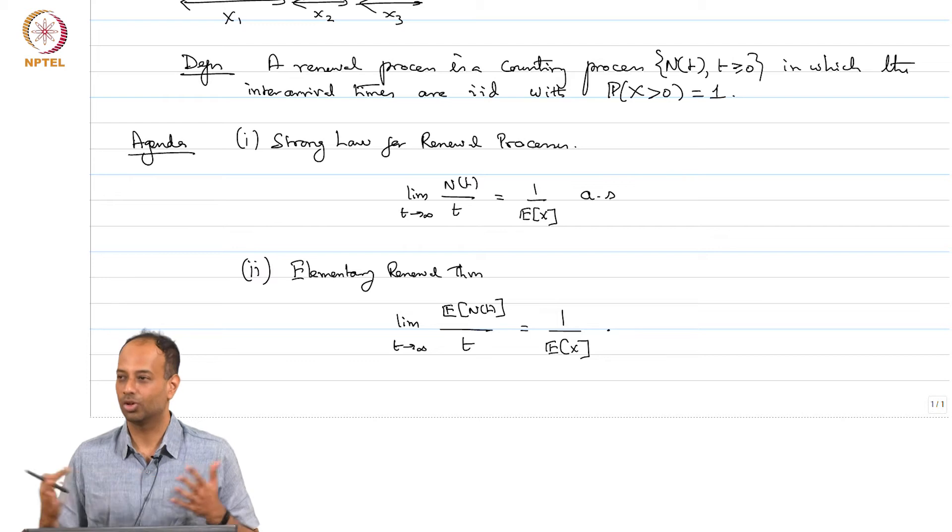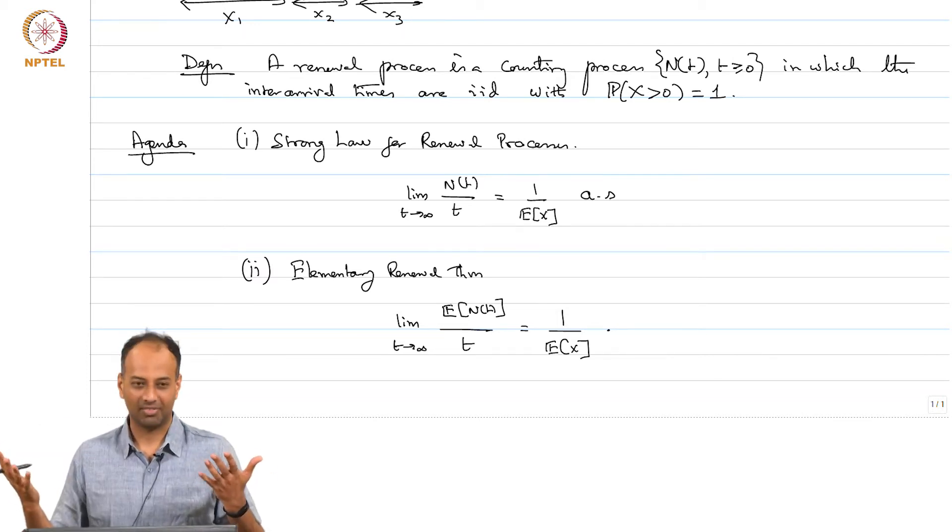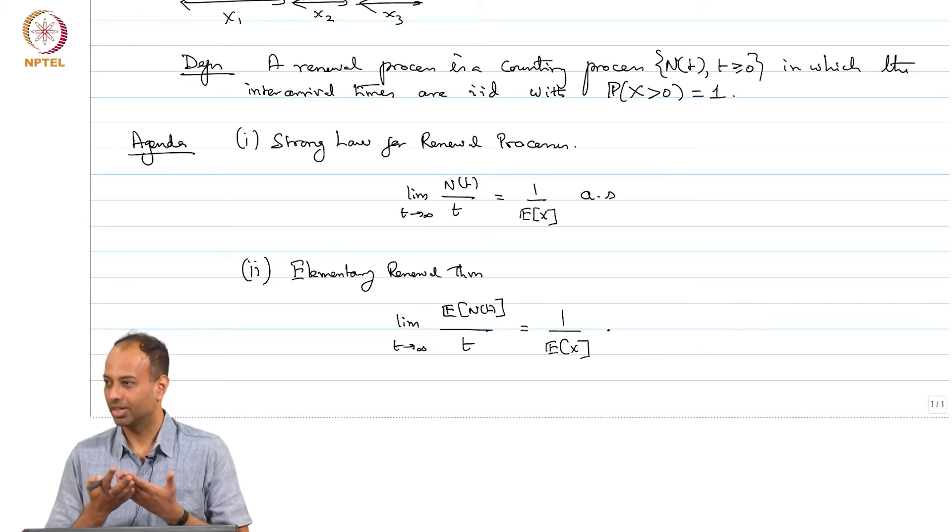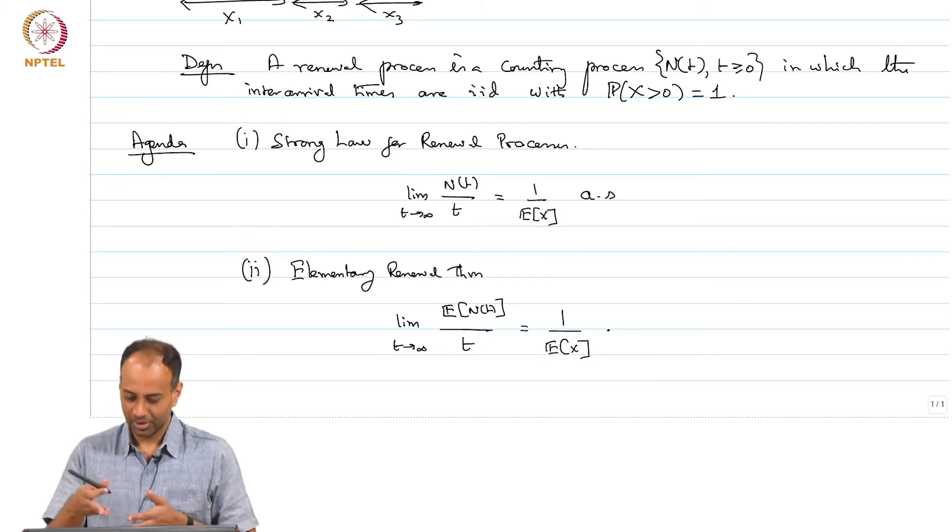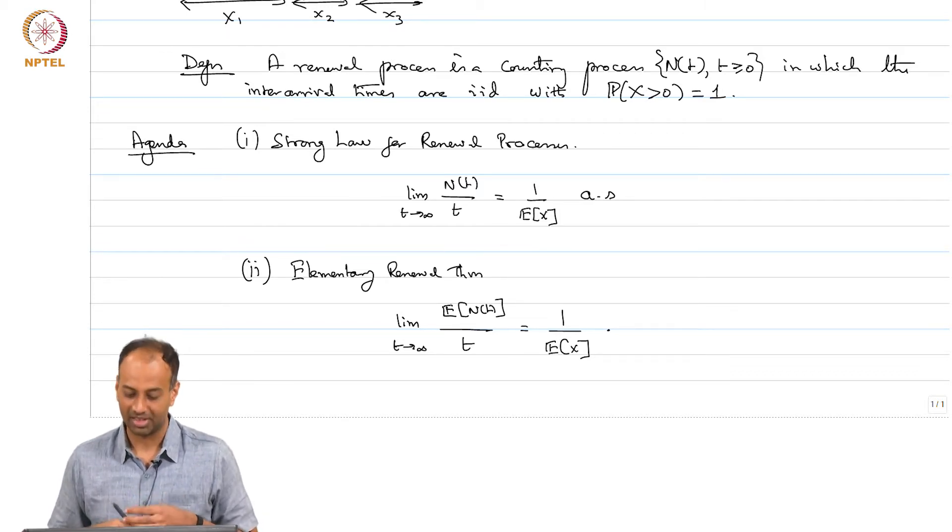Throughout this course, we will be dealing with ensemble averages and time averages and very often they will be equal. And for nice processes, the ensemble average and time average will be equal. Processes for which time average and ensemble average are equal are known as ergodic processes, and this leads to whole theory called ergodic theory. You can see that the answer is the same, it is already saying that there is something ergodic about a renewal process, the ensemble average and the time average.